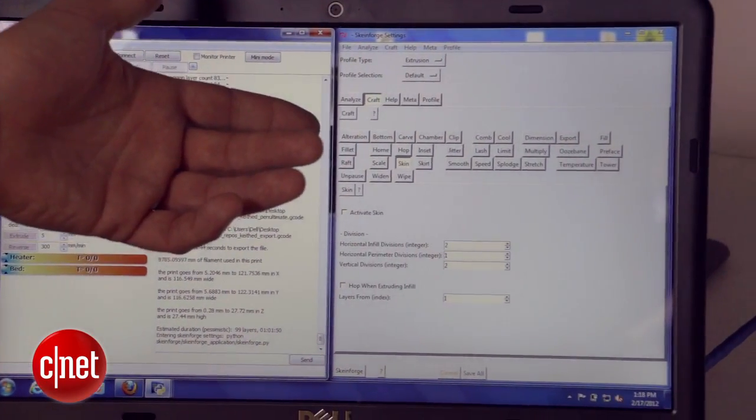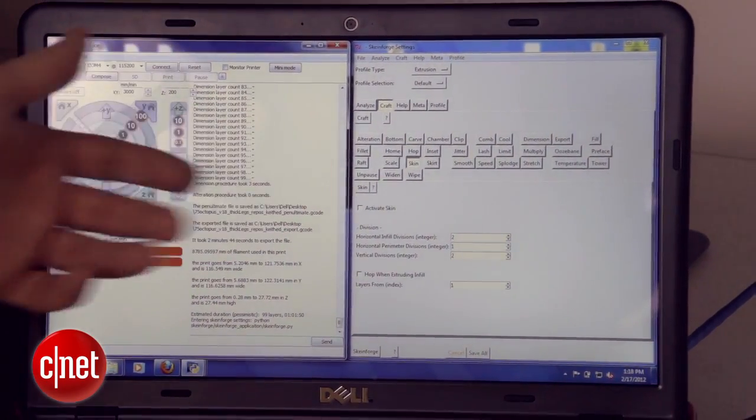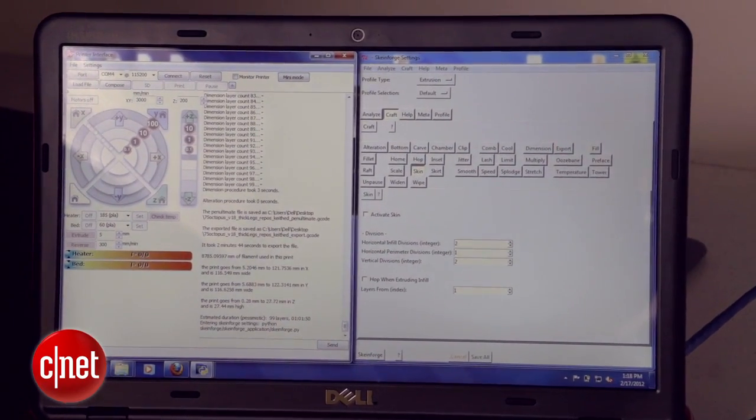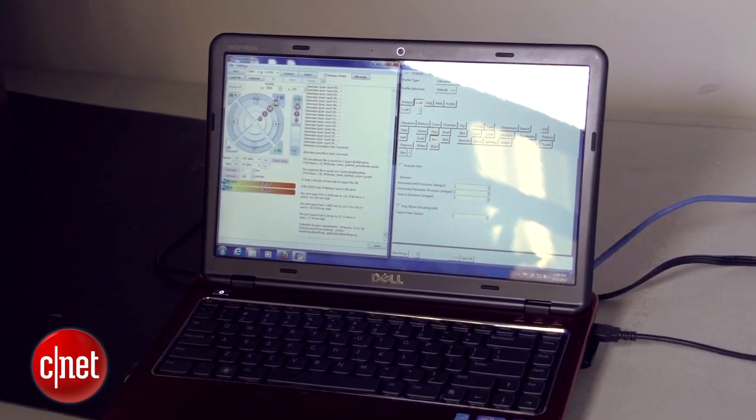And over here on the next window we have Skeinforge, however you want to pronounce that. And this is the part of the software that we use to control the detailed settings, the speeds, the depths. It's also something where there's numerous amounts of settings that can be set, controlled, and adjusted way beyond the scope of what we've dealt into here.